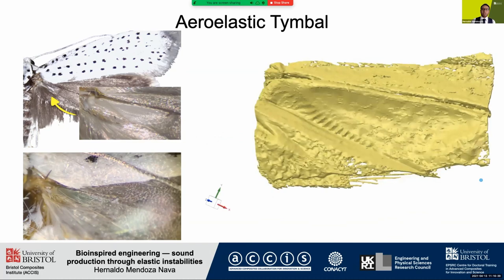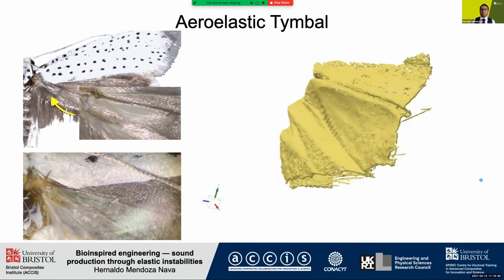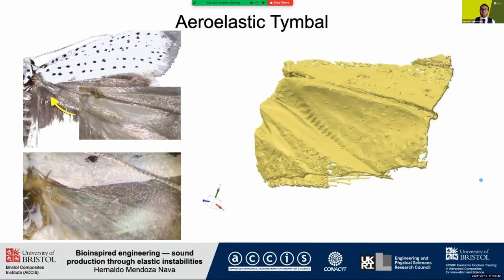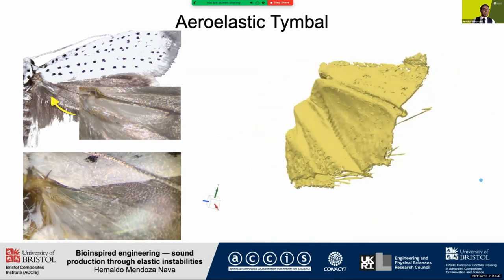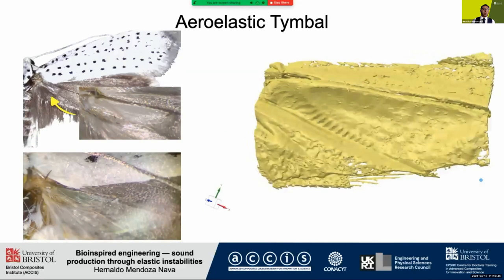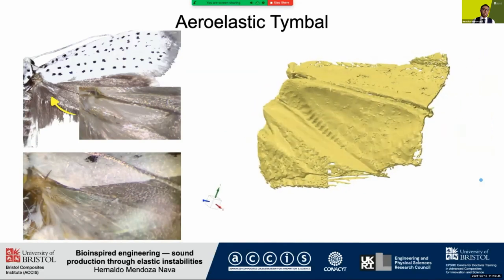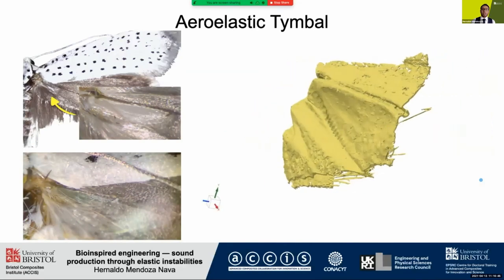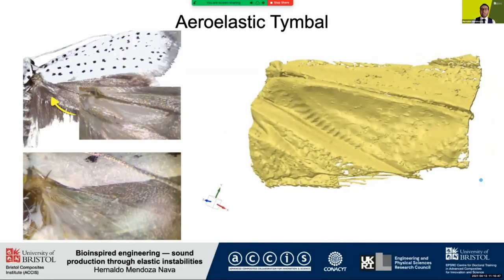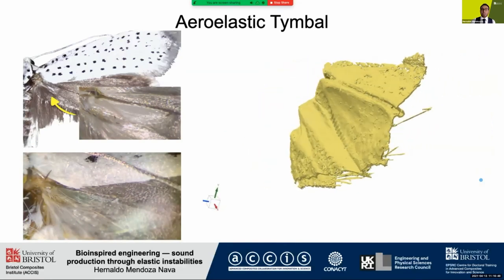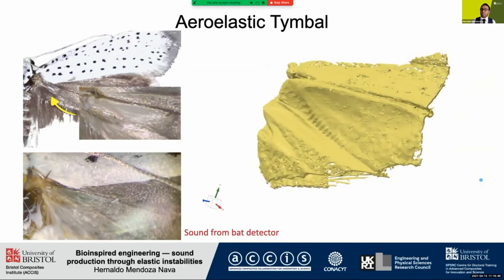Sound production is triggered when each individual striation is buckled. By manipulating a wing it is possible to buckle the striations. Notice that the ultrasound is heard through a bat detector.